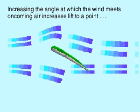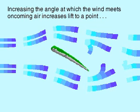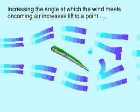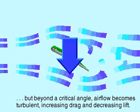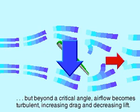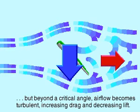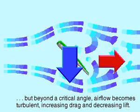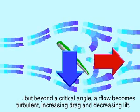The angle of the wings affects lift. Increasing the angle at which the wing meets the air can increase lift to a point, but beyond a critical angle, airflow will become turbulent, increasing drag and decreasing lift.